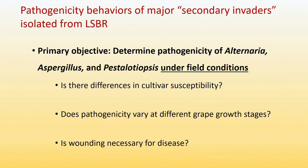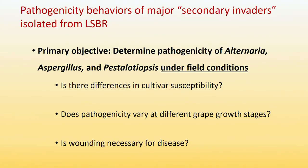According to some literature, those fungal species are considered secondary invaders or secondary pathogens, which means they are not capable of initiating infections by themselves. So we had a trial last year to confirm their pathogenicity under field conditions. We were also wondering: are there differences in cultivar susceptibility, does pathogenicity vary at different growth stages, and is wounding necessary for disease?